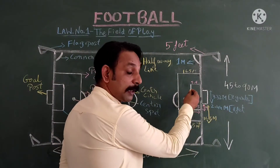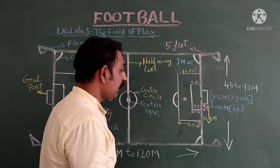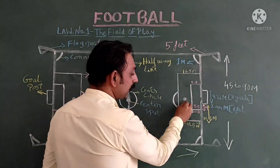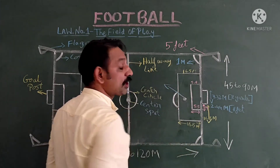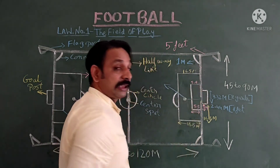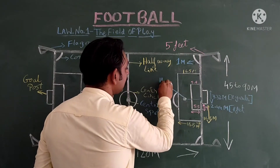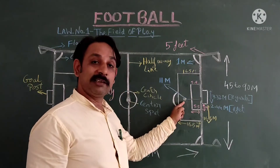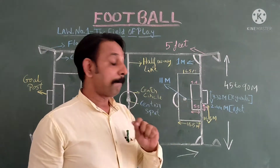From the center of the goal post, you can see a penalty spot. The distance of this penalty spot from the center of the goal post is 11 meters.